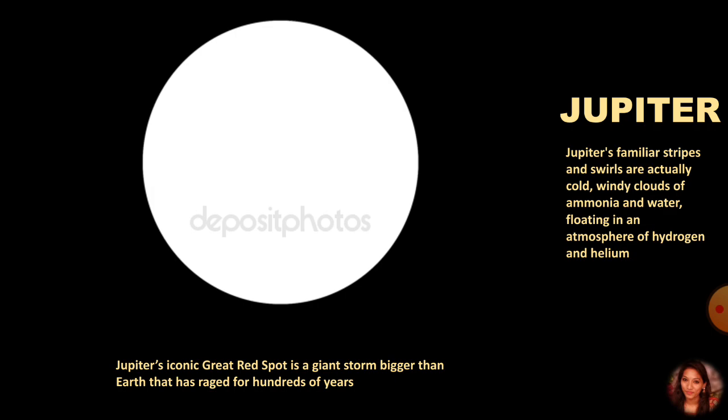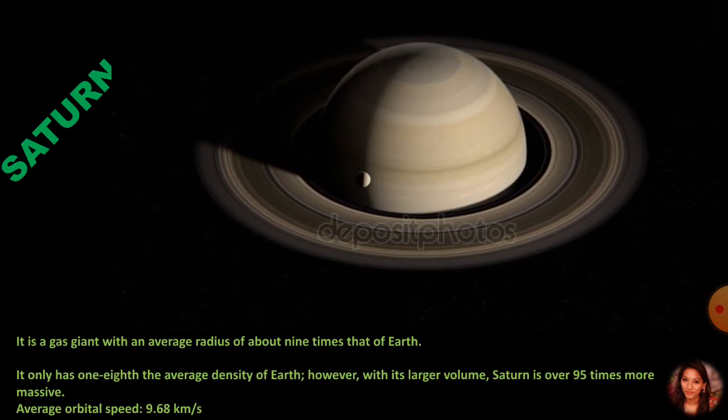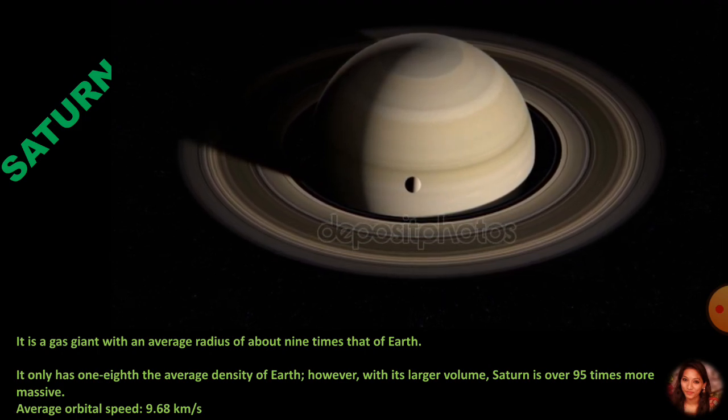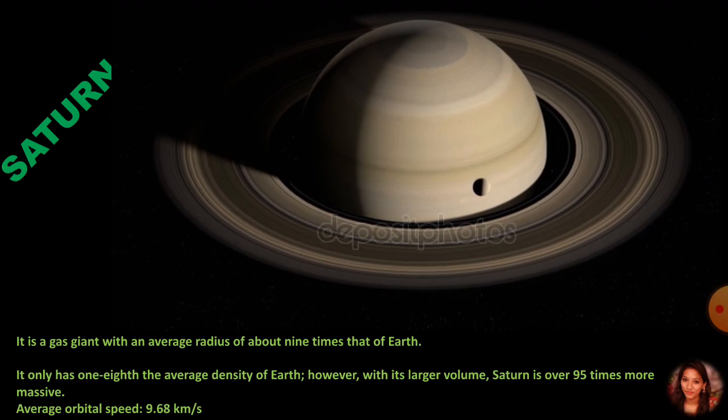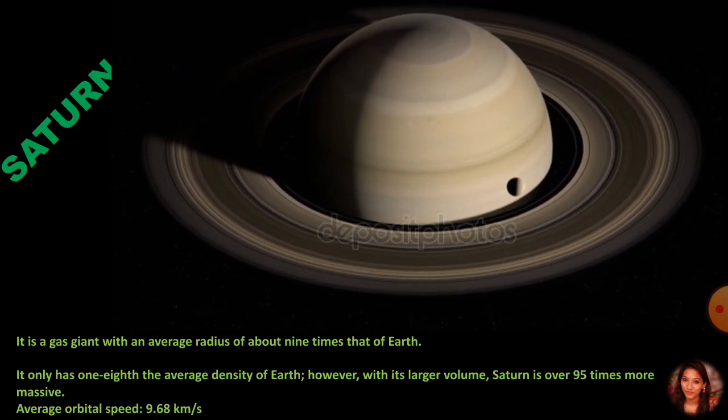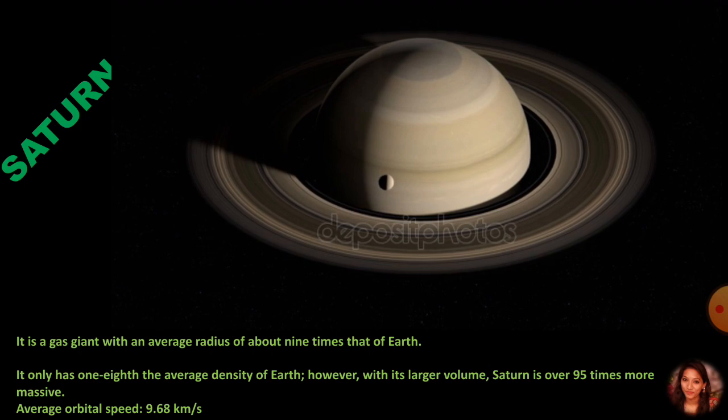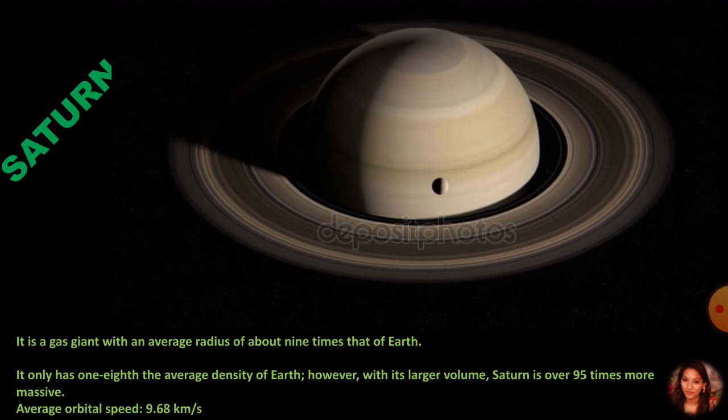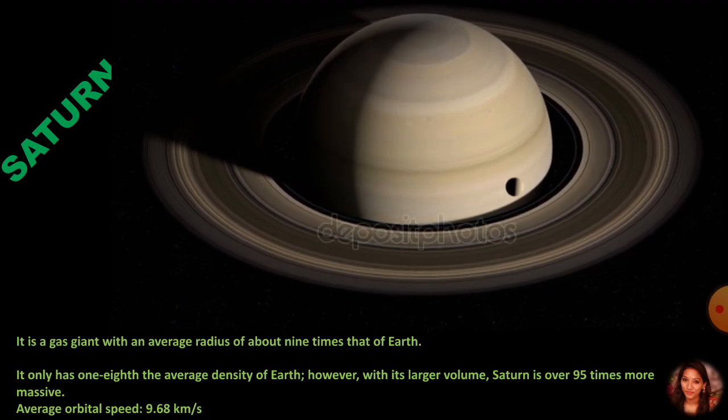Now comes Saturn. It is a gas giant with an average radius of about nine times that of Earth. It only has one-eighth the average density of Earth; however, with its larger volume, Saturn is over 95 times more massive. The average orbital speed is 9.68 kilometers per second. What makes it unique in the solar system is its beautiful rings. These rings are not visible with the naked eye; you can observe them with a small telescope. Saturn also has a large number of satellites.